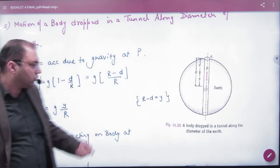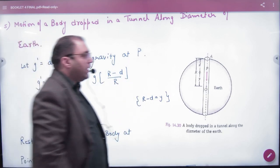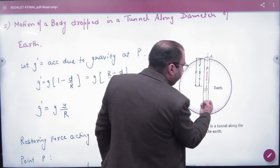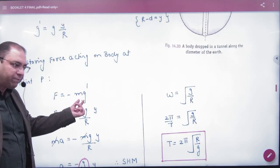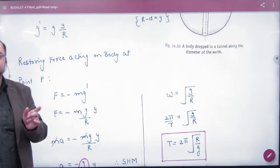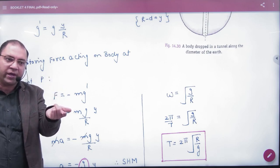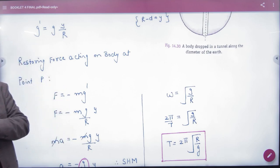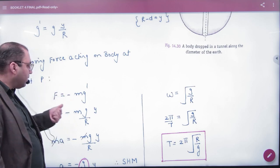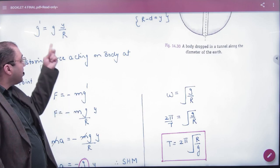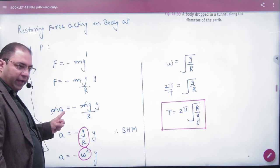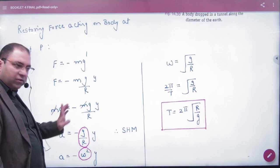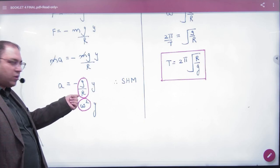At point P, the weight of the body is not mg but mg'. So force equals -mg' with negative sign for restoring force. Substituting g' = g(y/R), force becomes -mg(y/R). Since F = ma, mass cancels out. Since g, and R are constants, acceleration is proportional to displacement with negative sign.